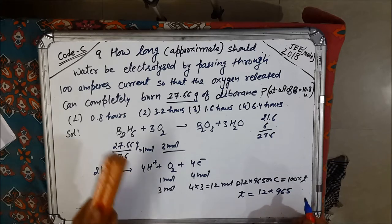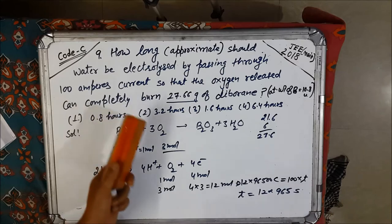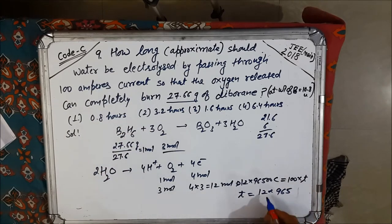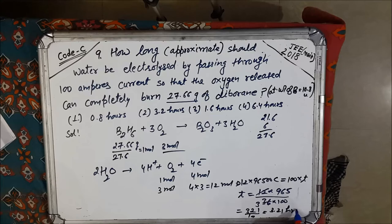So time equals 12 into 96,500 divided by 100. But we need time in hours, so to get time in hours we divide it by 3600. So 36 into 100, it comes out to be 321 something divided by 100, so it is 3.21. So the right option is second.